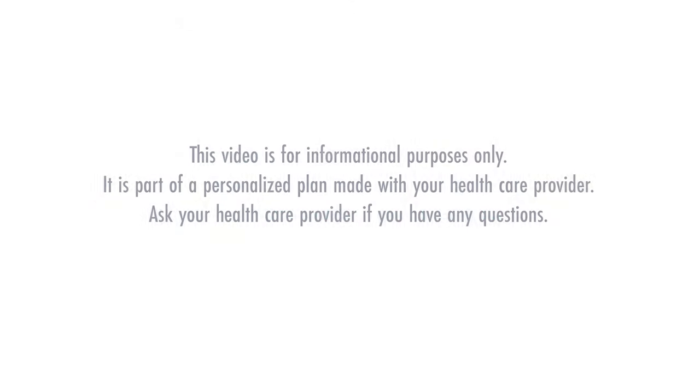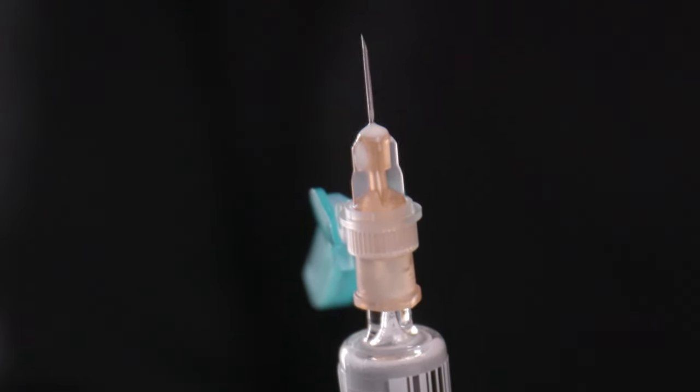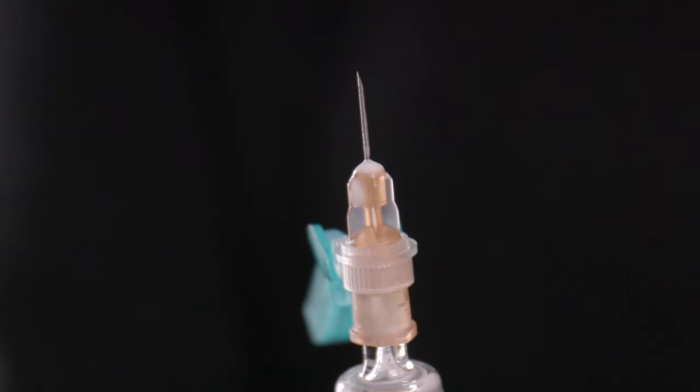Depo-Provera is an injectable birth control that is given every 12 weeks to help prevent pregnancy. There are two different types of Depo-Provera. One is given to you by a medical professional in a clinic and the other you can give to yourself at home.